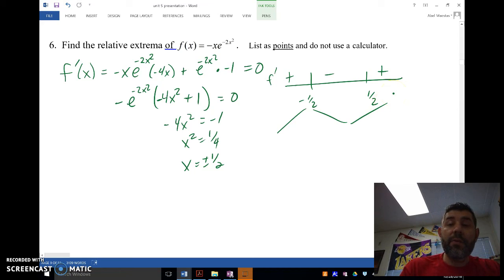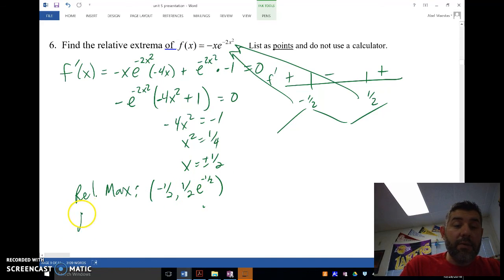So then what am I going to do with that? Well, I'm going to plug in negative one half into my function and one half into my function to find my points. So my relative max is going to be at negative one half comma one half e to the negative one half, and my relative min is going to be at one half comma negative one half e to the negative one half.